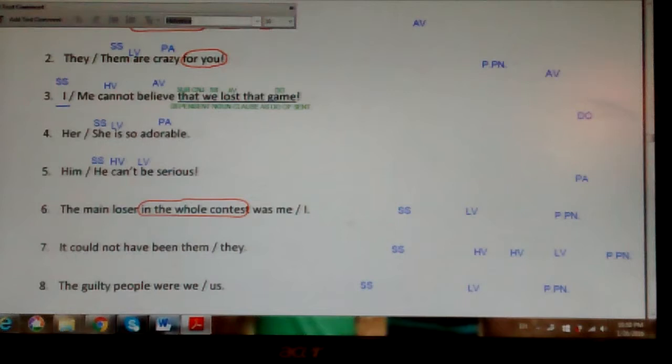Now those sound well, they sound good and they do work out well, but the ones that are tricky again are these predicate words that are predicate pronouns. Look at number six. The main loser in the whole contest was me or I. Prepositional phrase in the whole contest. Linking verb was. Try this again. Was, linking verb. Who or what was? This is about the loser. And now I'm linking loser to a word in the predicate, and the loser was, predicate pronoun I. I would be the correct choice.